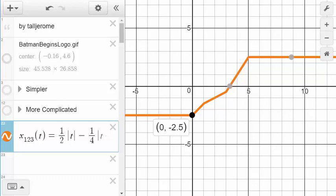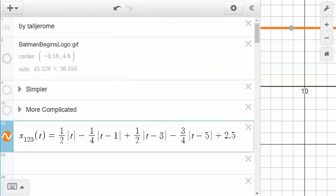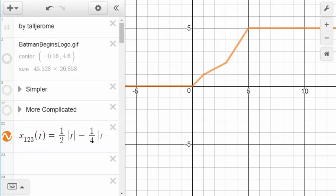And we want it to go through 0, 0, so I need to move this up 2.5. I'll put a plus 2.5 at the end of the equation. There it's going through the origin.